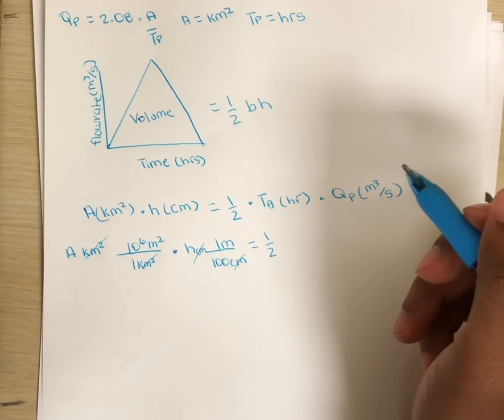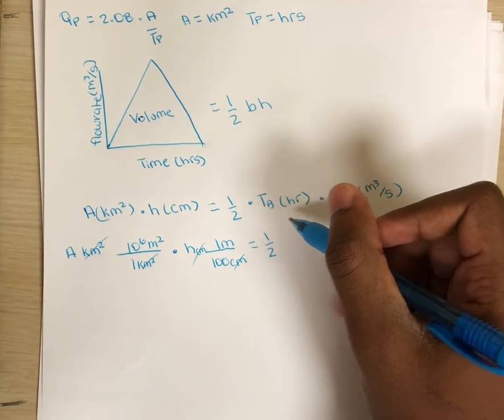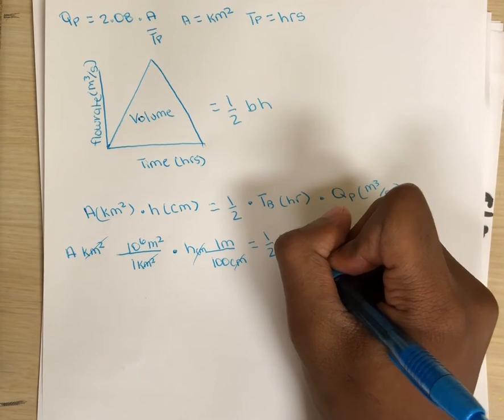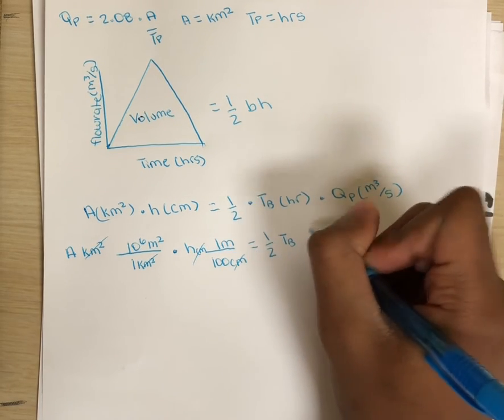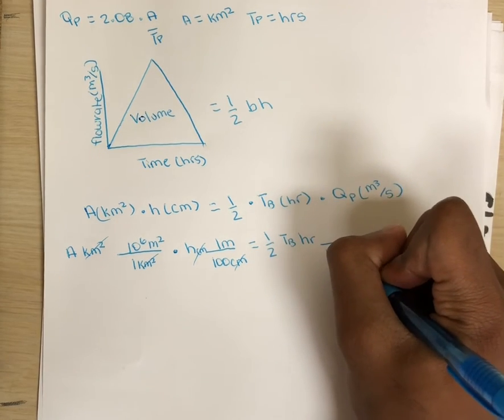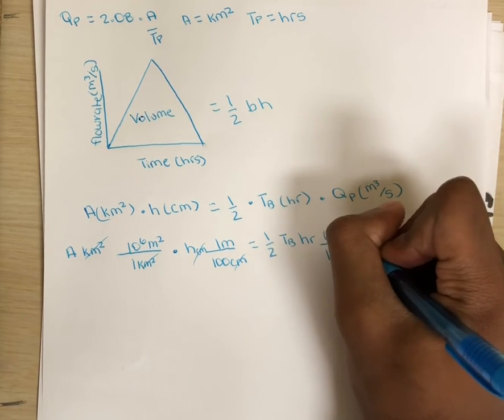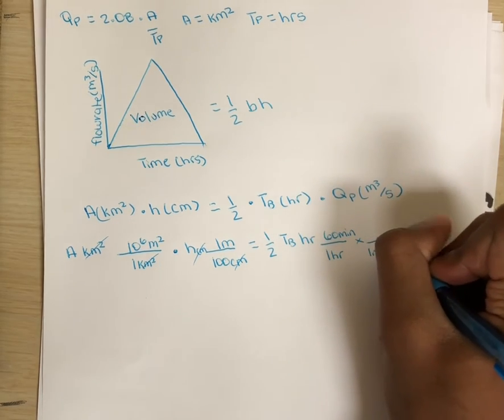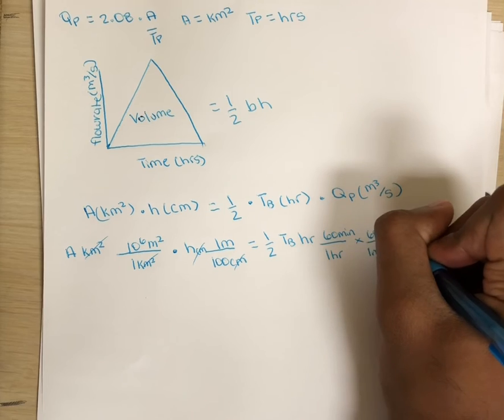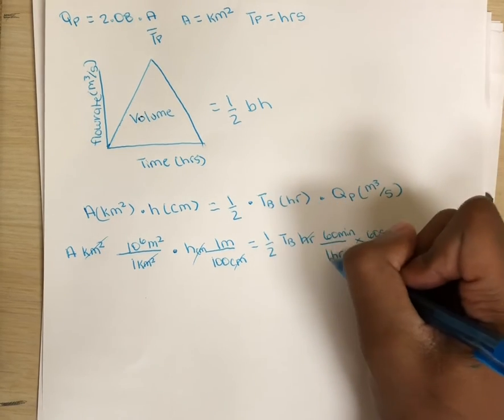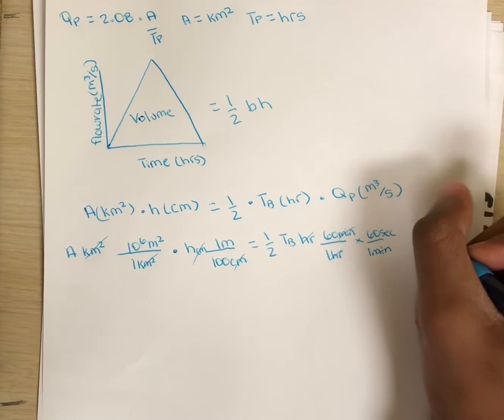Lastly, let's do the same to the time base. Let's convert hours to seconds. So in one hour, there are 60 minutes. And in one minute, there are 60 seconds. The hours cancel, the minutes cancel, leaving just seconds.